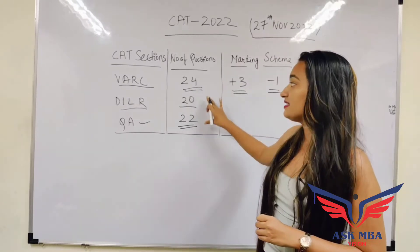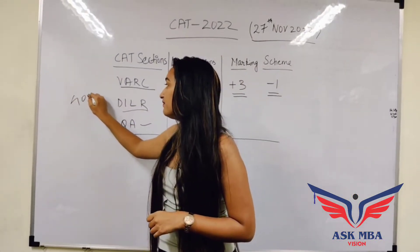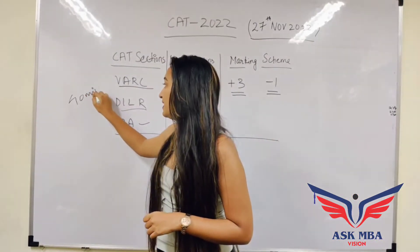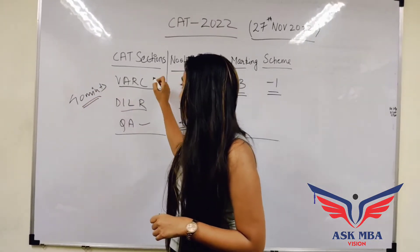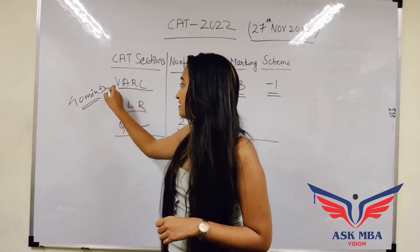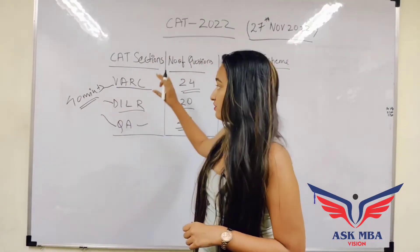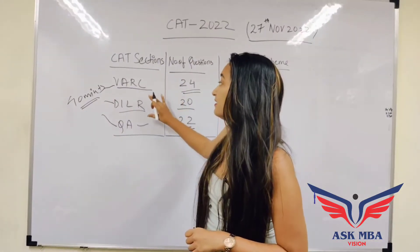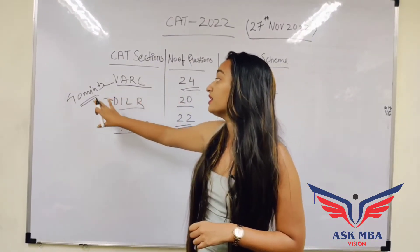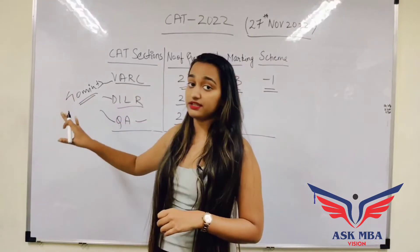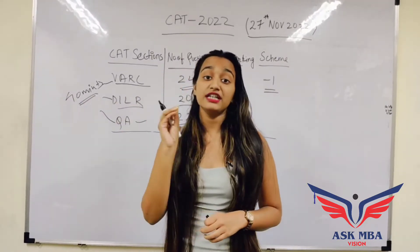For each section, there are a total of 40 minutes being given. So you will be getting 40 minutes for each of the specific sections — Verbal, DILR, and QUANT — in your CAD examination.